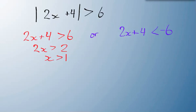On the blue side over here, if I subtract 4 from both sides, 2x is less than minus 10, x is less than minus 5.